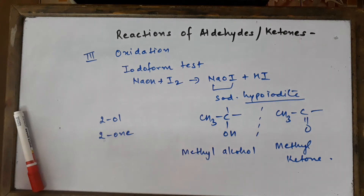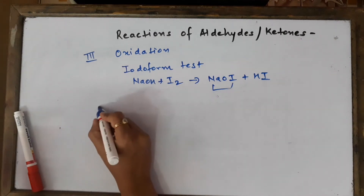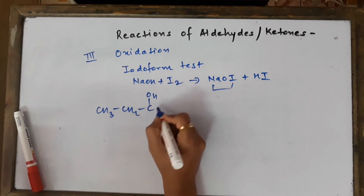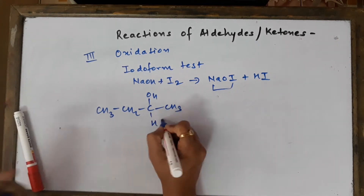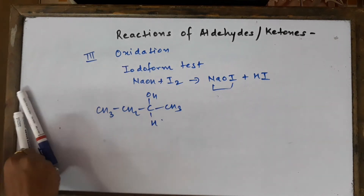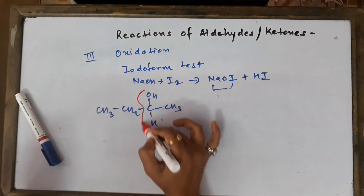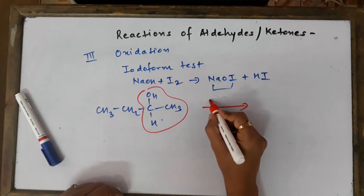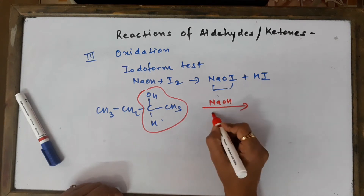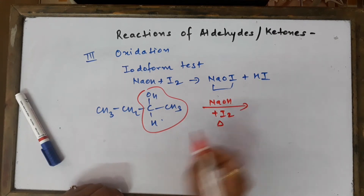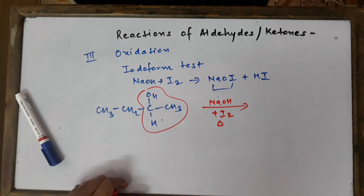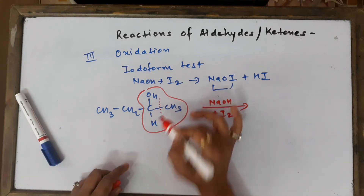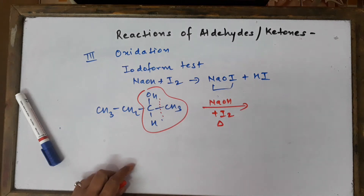Let's take an example: consider the compound CH₃CH₂CH(OH)CH₃. I am looking for the methyl alcohol structure in it. When this compound is treated with sodium hydroxide plus iodine and heated, the terminal CH₃ group is removed and converted into a yellow colored crystalline product.